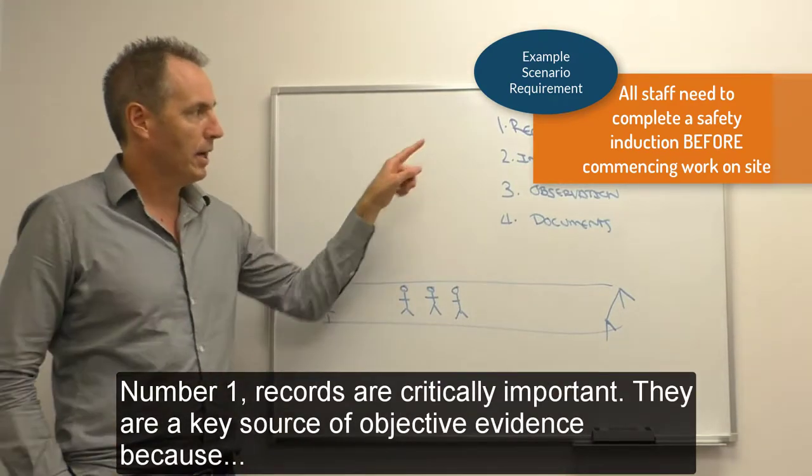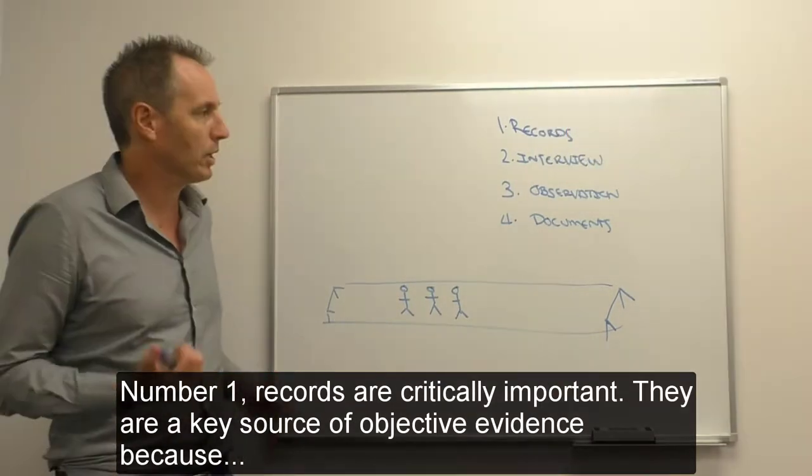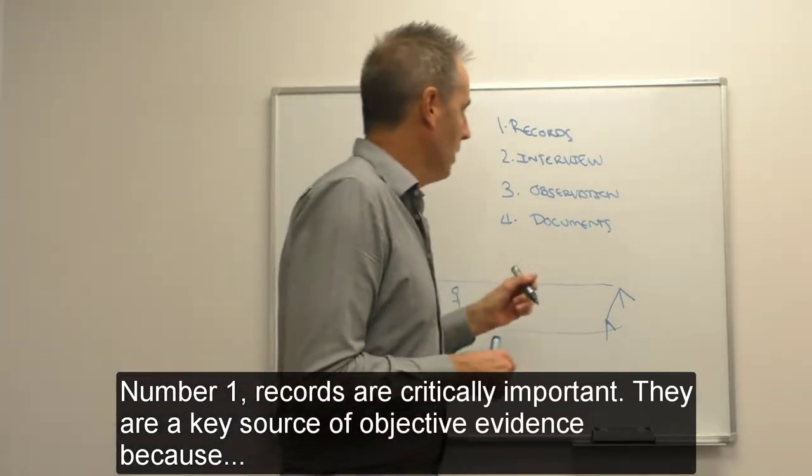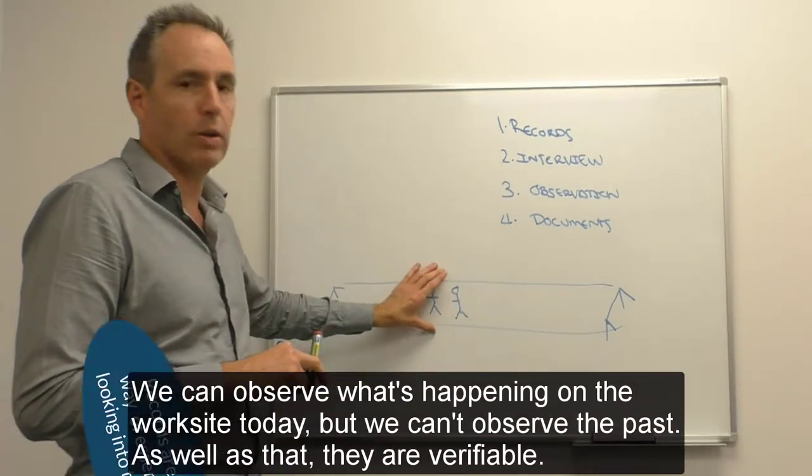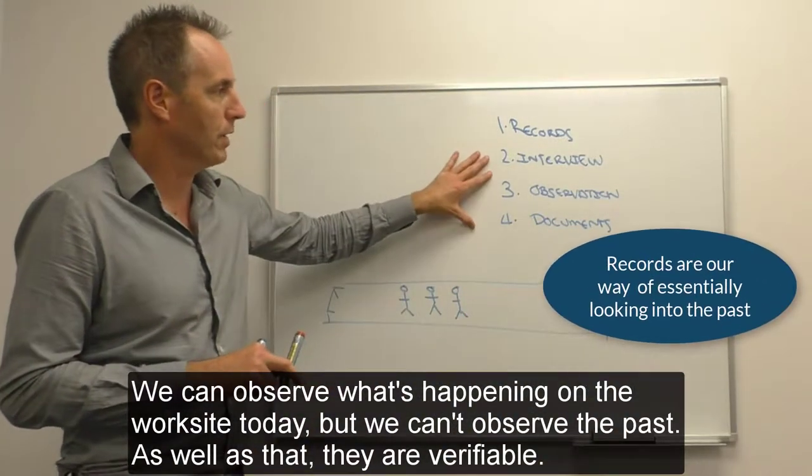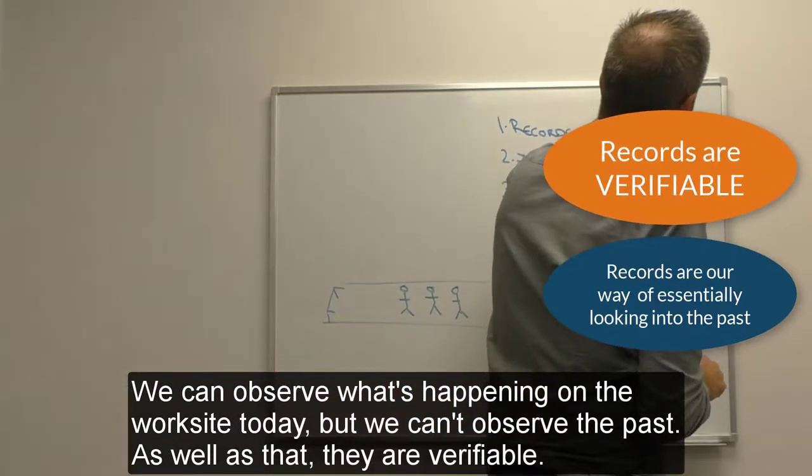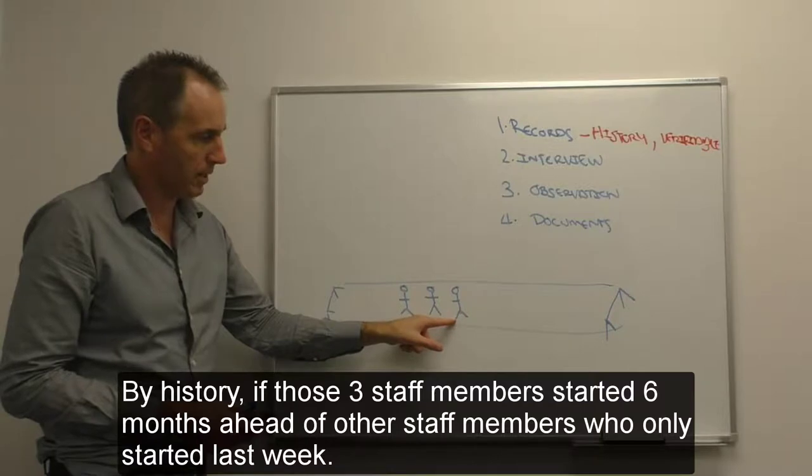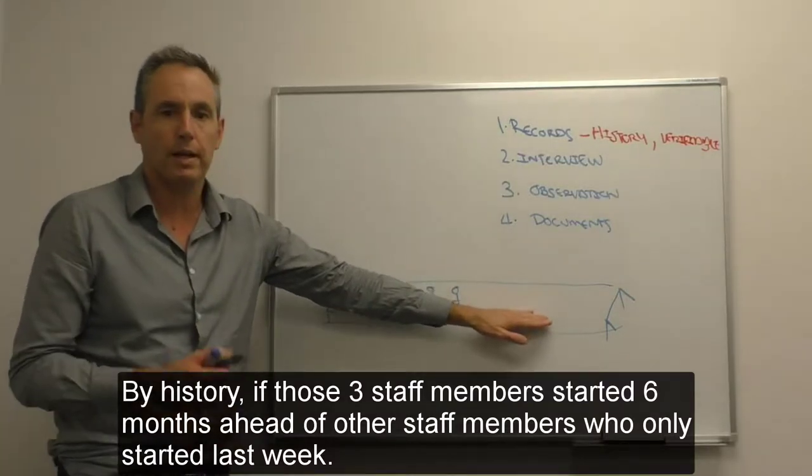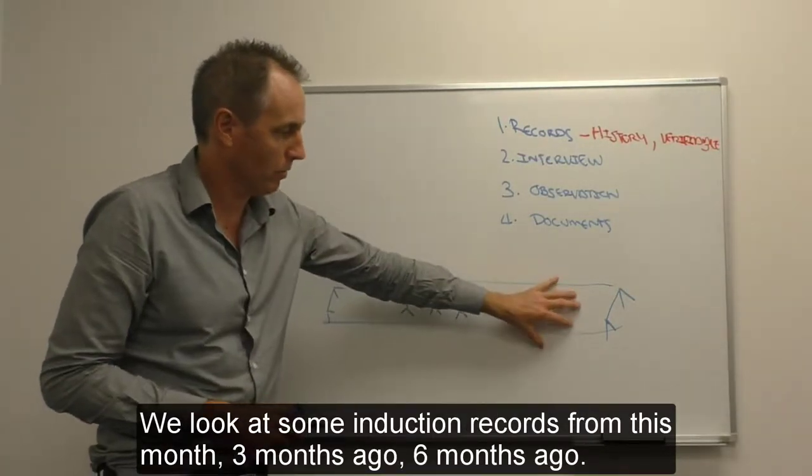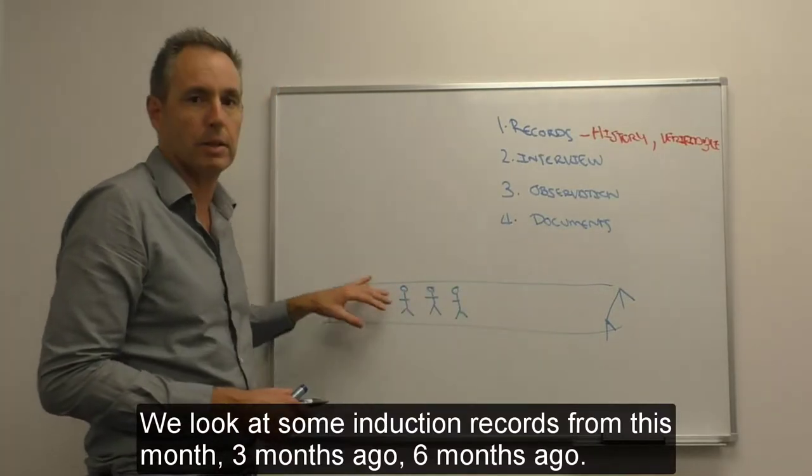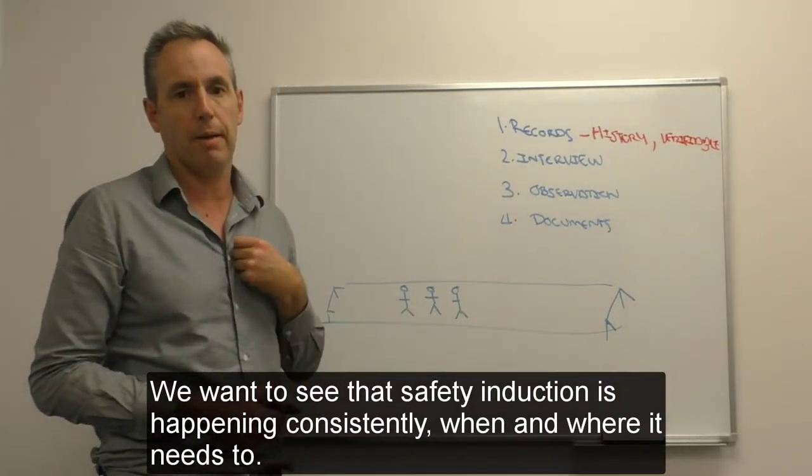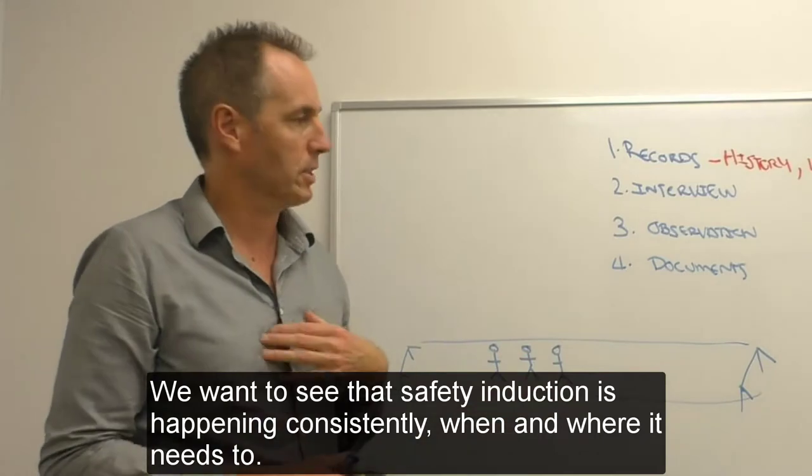Number one, records are critically important. They're a key source of objective evidence because we can observe what's happening on the worksite today, but we can't observe the past. They're also verifiable by history. If those three staff members started six months ahead of other staff members who only started last week, we look at induction records from this month, three months ago, six months ago. We want to see that safety induction is happening consistently when and where it needs to.